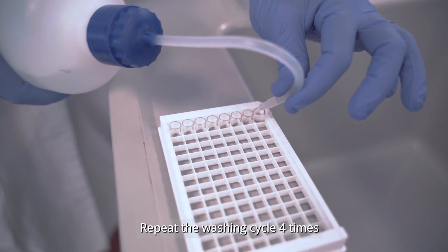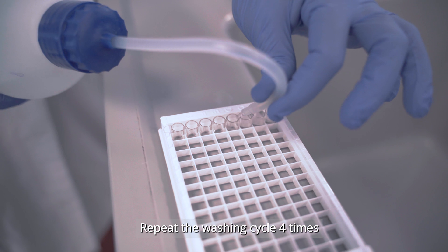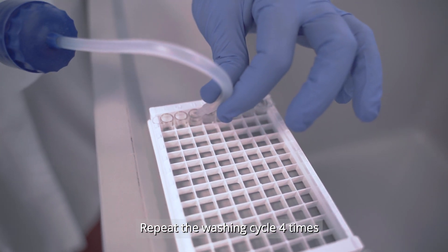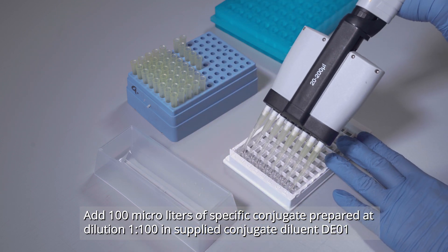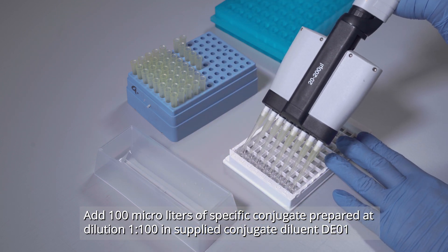Empty the wells into a container with sodium hydroxide solution and wash four times. Add 100 microliters of specific conjugate to each well.